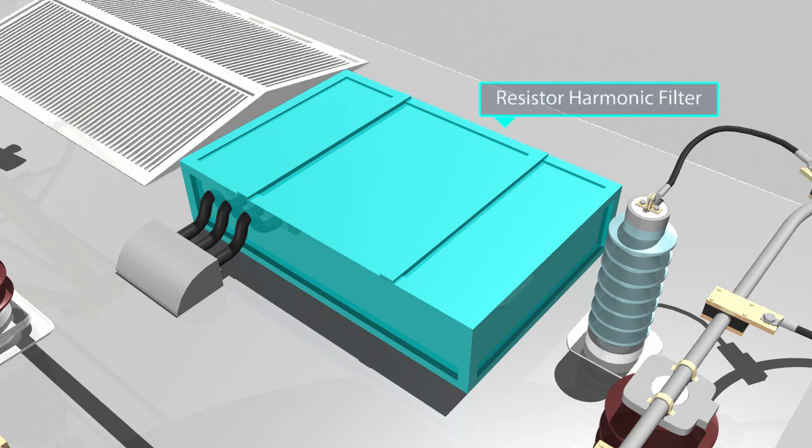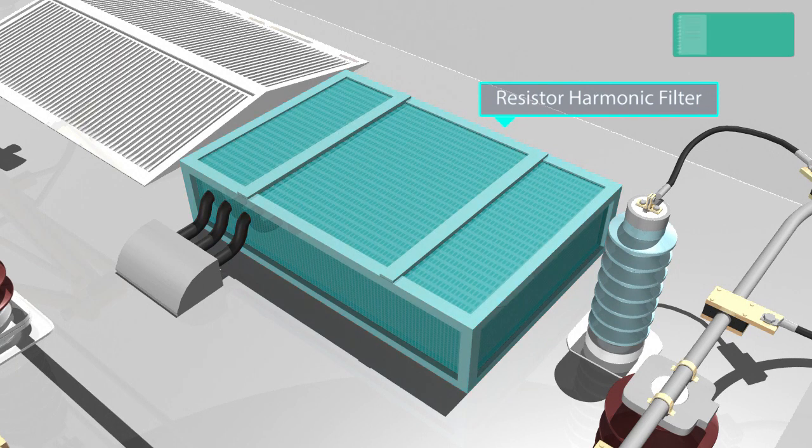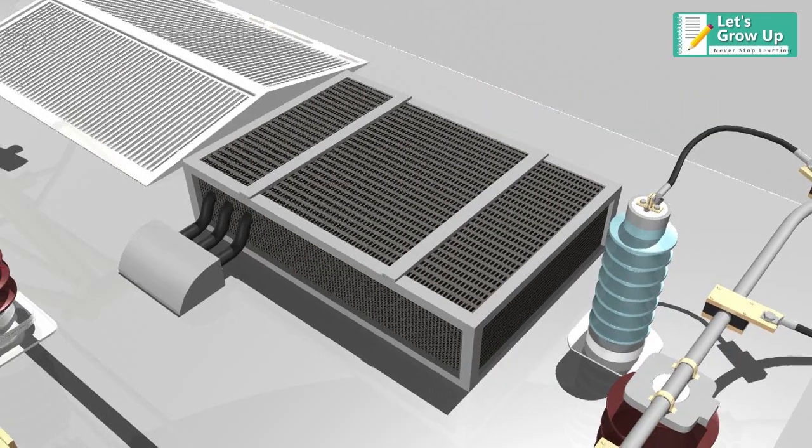Resistor harmonic filter: It is connected with the primary winding of the main transformer and consists of a resistor and capacitors.